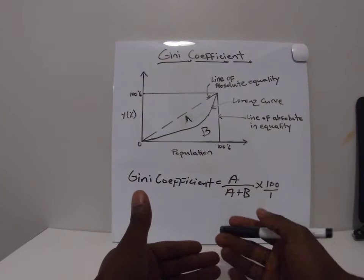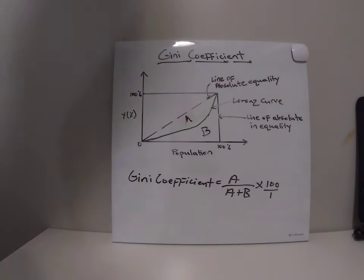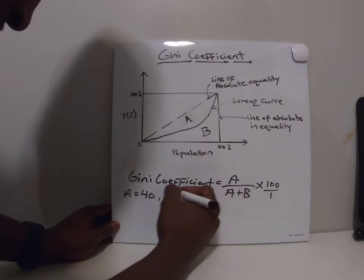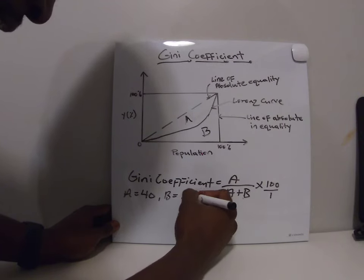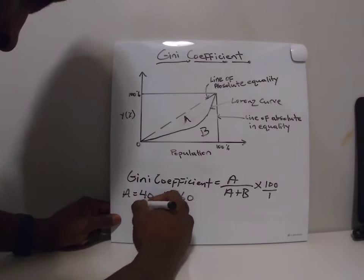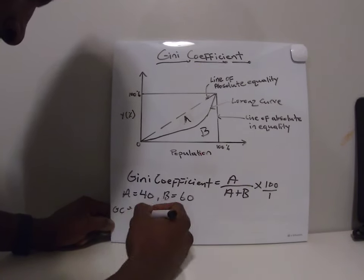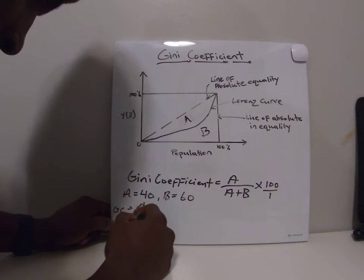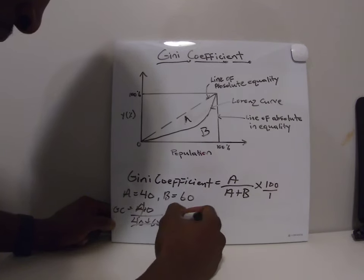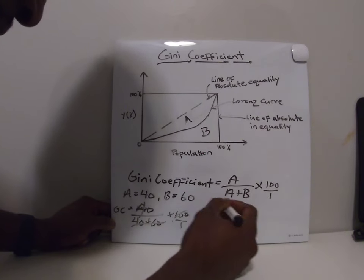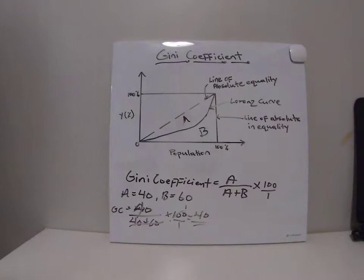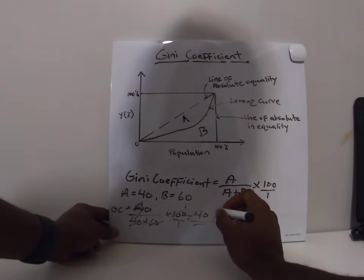For instance, if A equals 40 and B equals 60 — because they have to equal 100 — plugging into the formula: GC equals 40 divided by (40 plus 60), multiplied by 100 over 1. That gives 40 divided by 100, multiplied by 100, which equals 40.